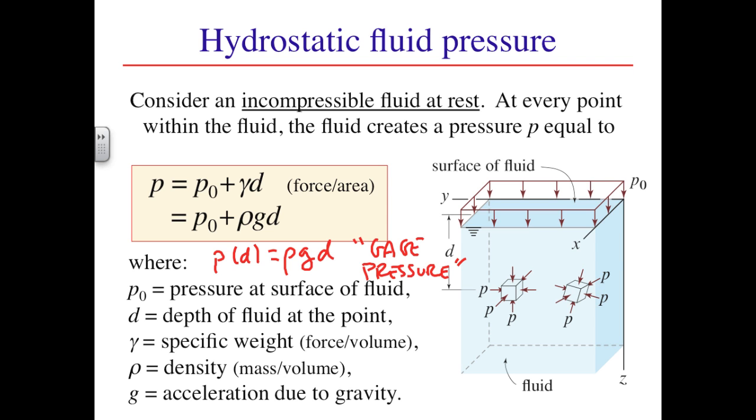Second, pressure acts normal to all surfaces simultaneously. In our free body diagram of the column, note that pressure acts on and is normal to all four sides of the column in addition to the top and bottom. This feature of pressure is often a source of confusion when drawing free body diagrams.